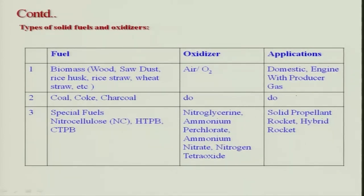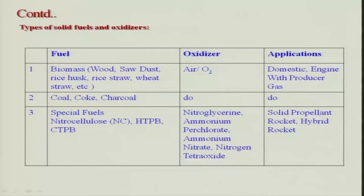Special fuels include nitrocellulose and nitroglycerin as oxidizers, HTPB (hydroxyl terminated polybutadiene) and CTPB (carboxy terminated polybutadiene), which are used profusely by ISRO. Oxidizers such as ammonium perchlorate, ammonium nitrate, and nitrogen tetroxide are used in solid propellant rocket engines and hybrid propellant rocket engines.